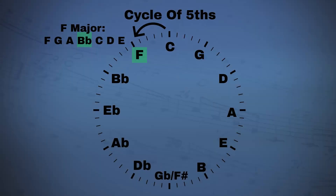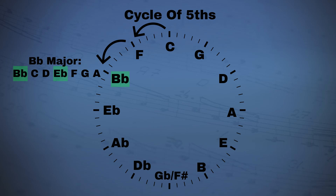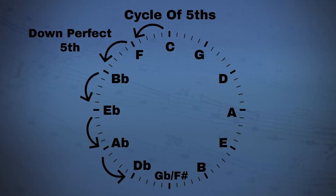As you go around anti-clockwise, we're adding one flat. So one step away from C anti-clockwise is one flat, two steps away is two flats, and so on. And here you're stepping down a perfect fifth each time.